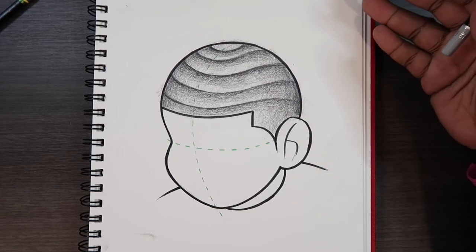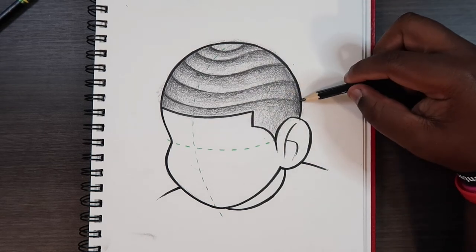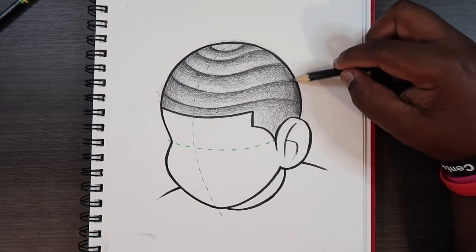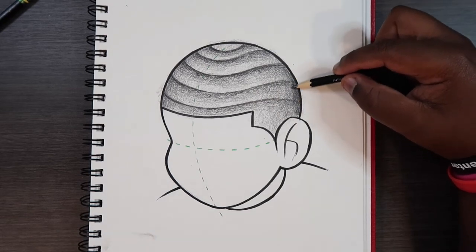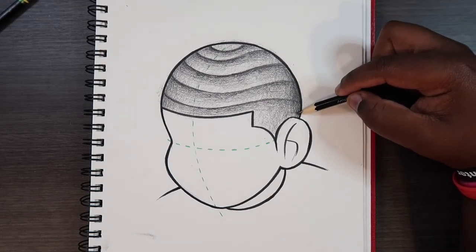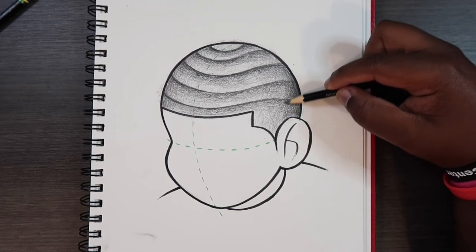But keep in mind we're working on top of three or so layers of graphite. So that means we got to push even harder. Apply a lot of pressure to the pencil, enough so you can apply a different level of shading to both sides of the head.